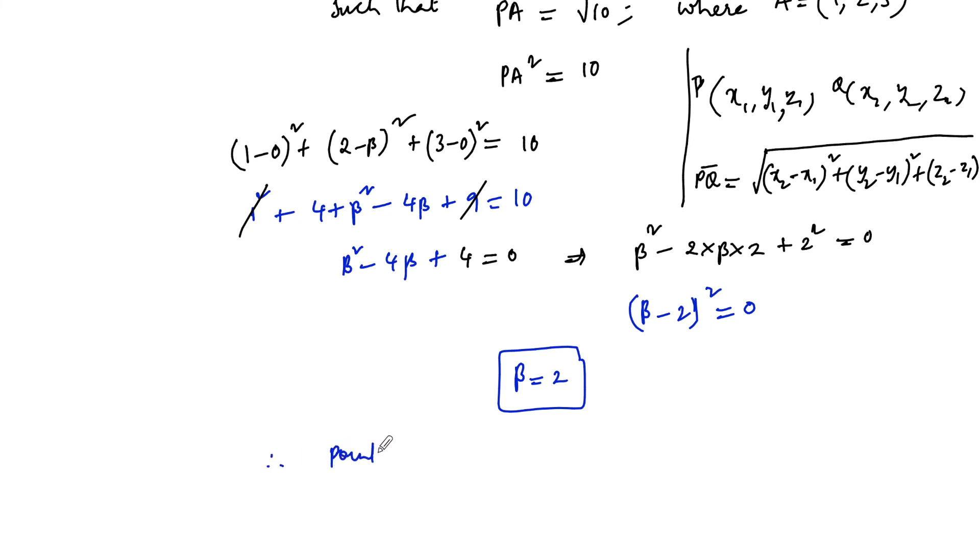Therefore, we can say the required point on y-axis such that PA is equal to root 10 units is (0, 2, 0).